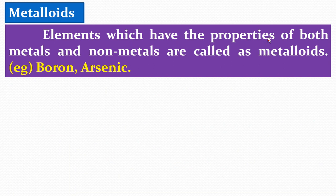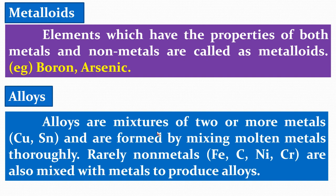Elements which have the properties of both metals and non-metals are called metalloids. Examples include boron, arsenic, germanium, silicon, etc. Next is alloys. Alloys are mixtures of two or more metals. For example, copper and tin (Sn) form an alloy called bronze. They are formed by mixing molten metals thoroughly. Sometimes non-metals are also included — for example, iron with carbon, nickel, and chromium forms stainless steel. So alloys can contain non-metals as well.